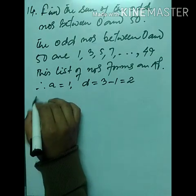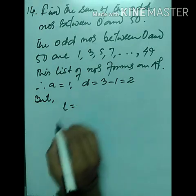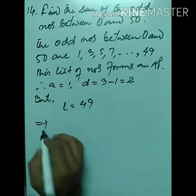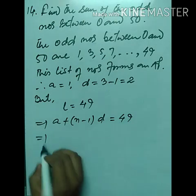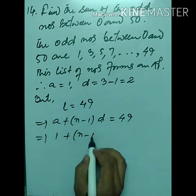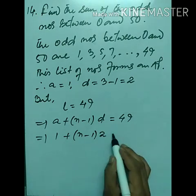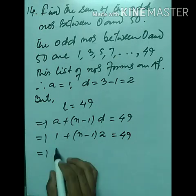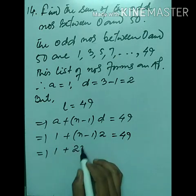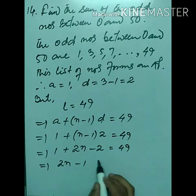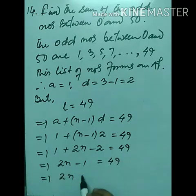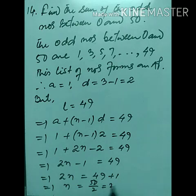The last term is 49. Using aₙ = a + (n−1)d: 1 + (n−1)×2 = 49, so 2(n−1) = 48, n−1 = 24, therefore n = 25. There are 25 terms.